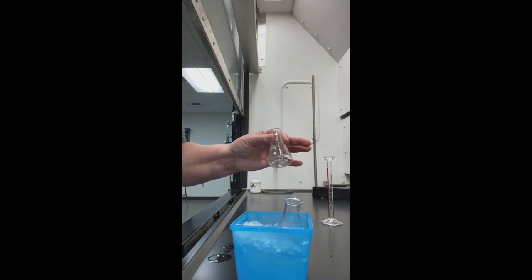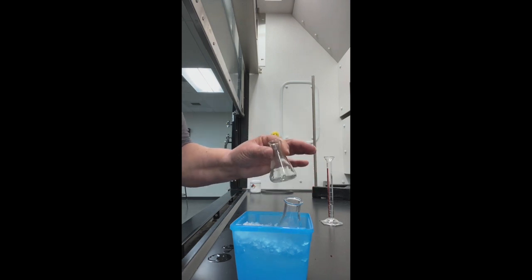Now in a separate flask, I'm going to mix three mls of concentrated sulfuric acid with three mls of concentrated nitric acid, and I'm going to cool that in a separate flask, but in the same ice bath.